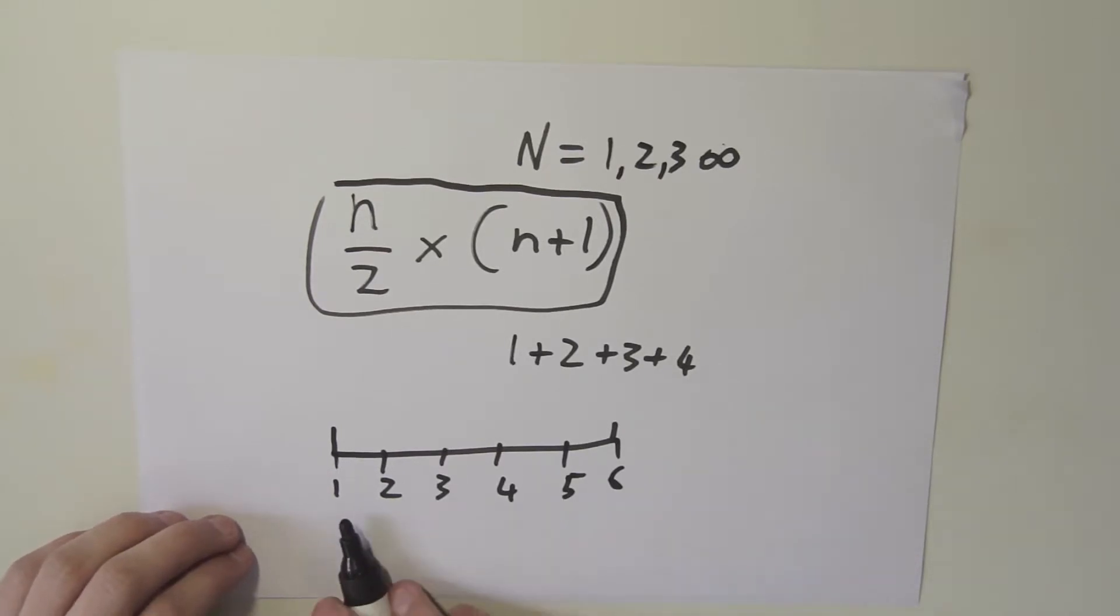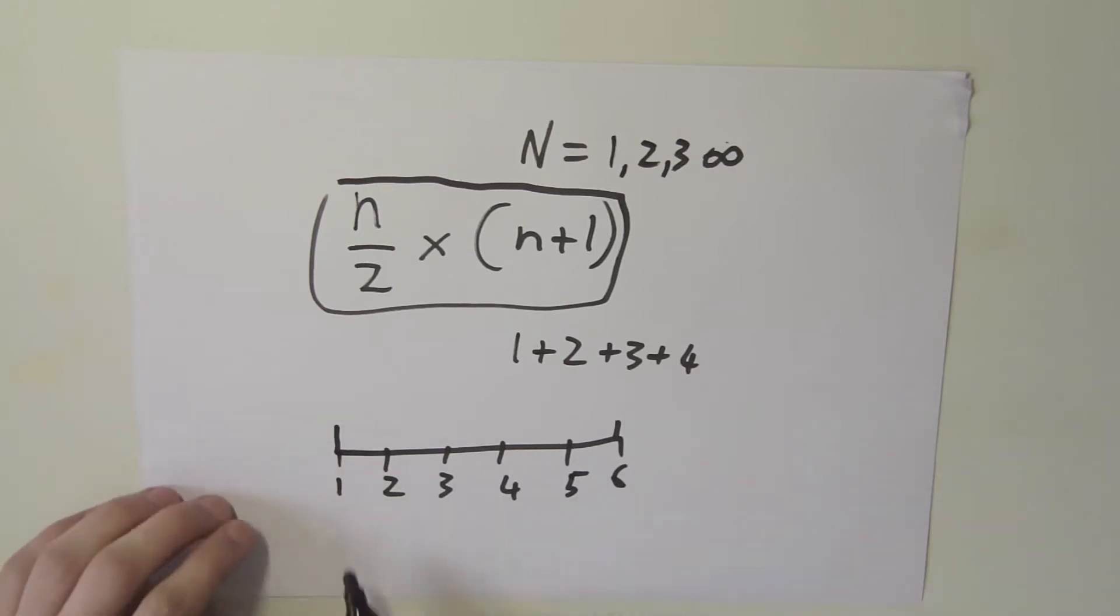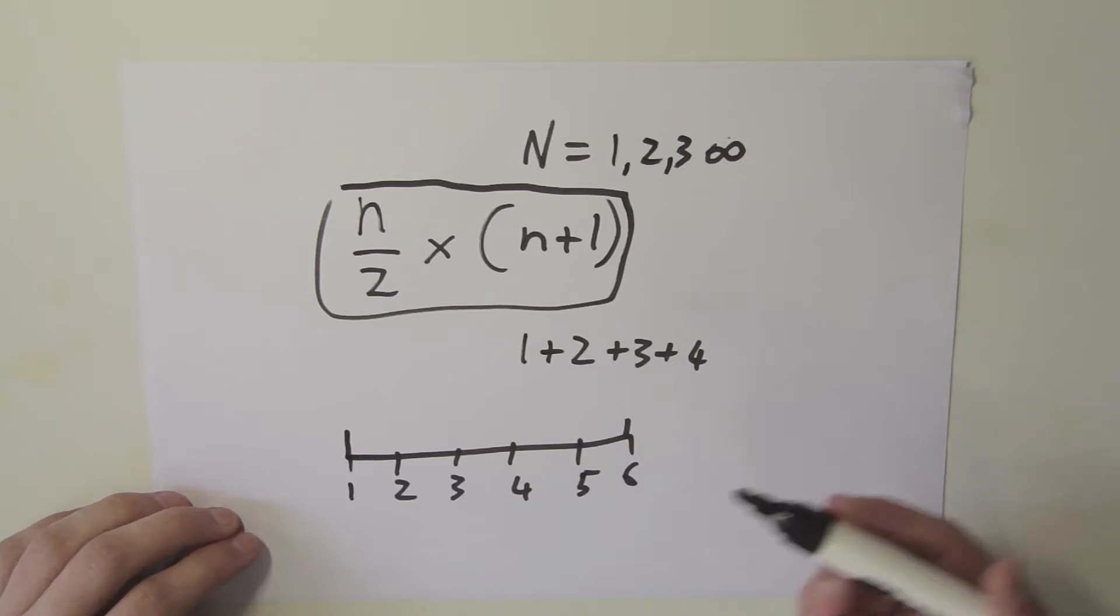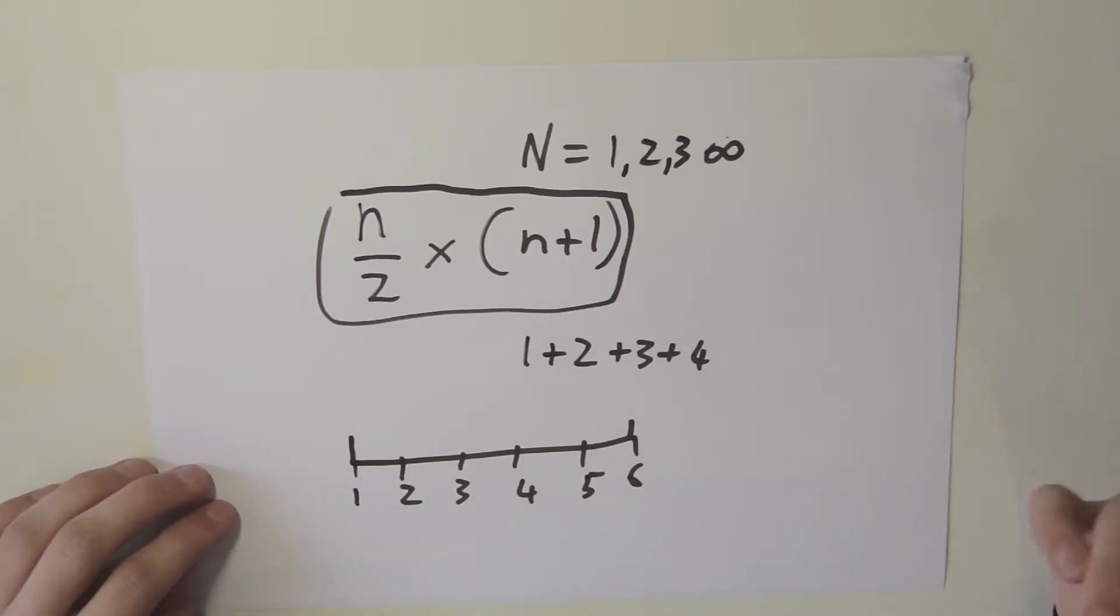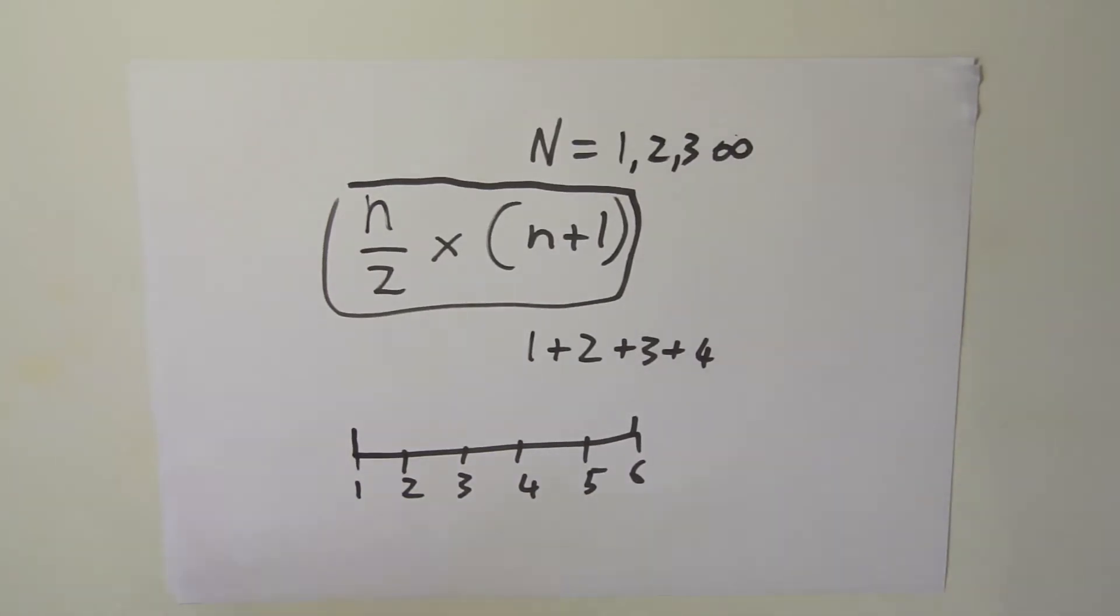Now, how are we going to add these numbers together? We can go about the repetitive way of 1 plus 2 plus 3 plus 4, and that will take a while. For 6, it won't be that difficult, but as n is larger, like 100, doing 1 plus 2 plus 3 up to 100 will take a very long time unless you're using a computer to do it for you.